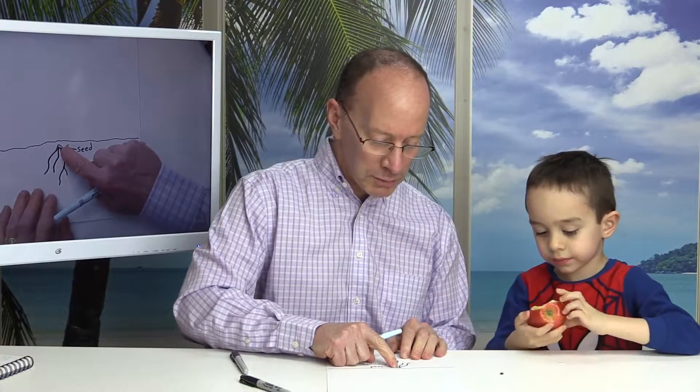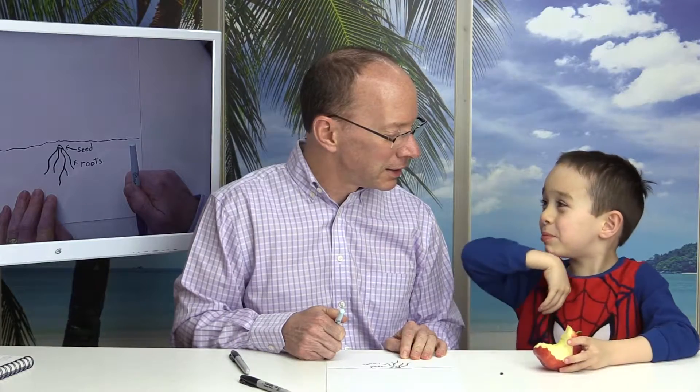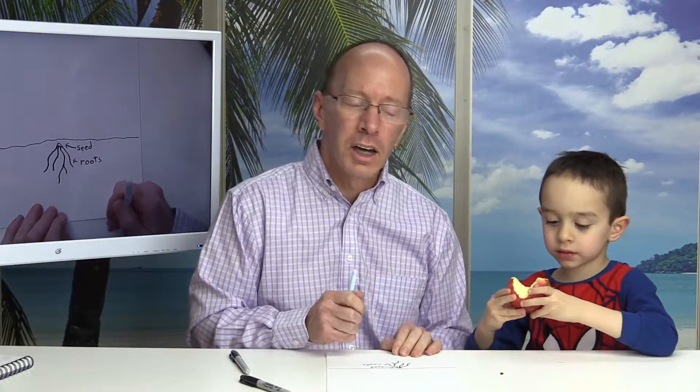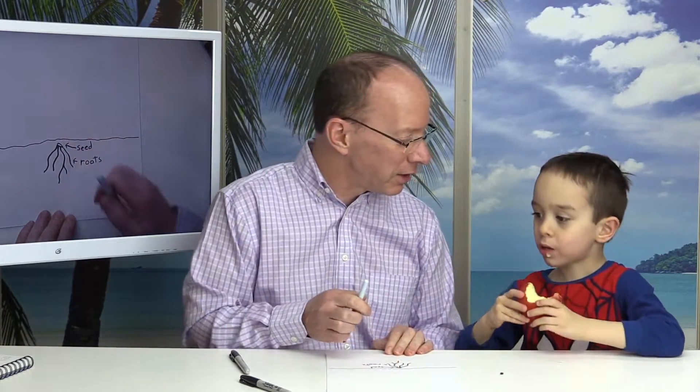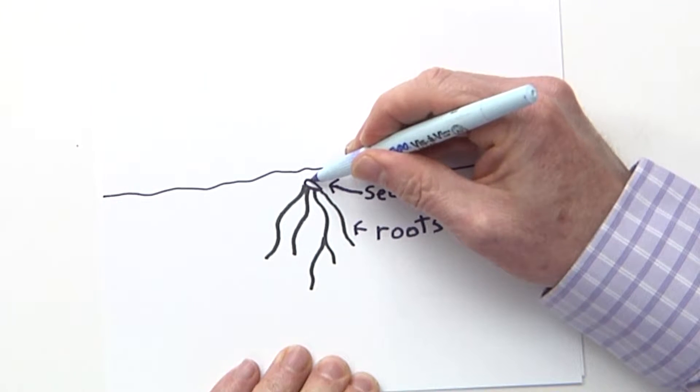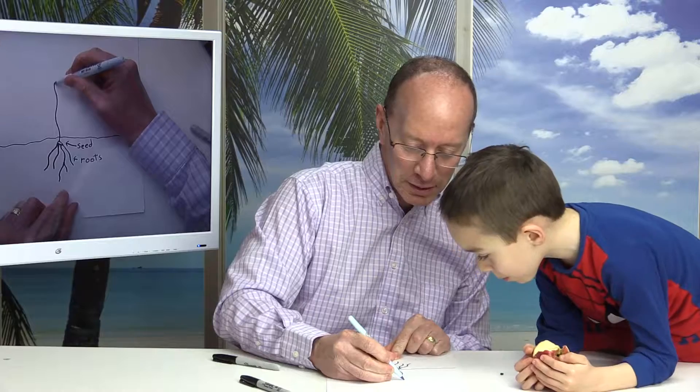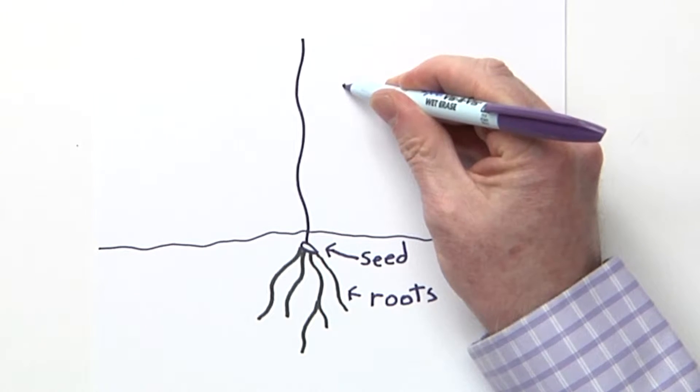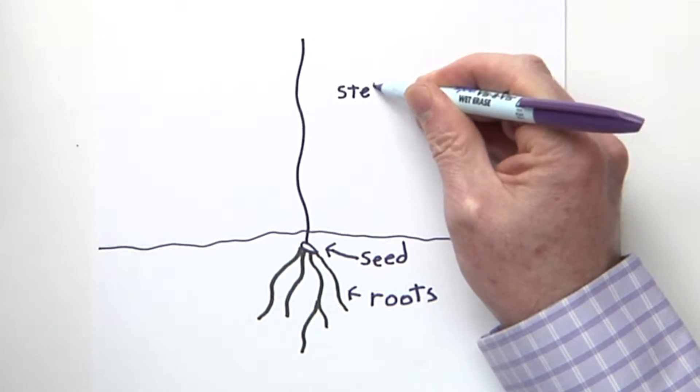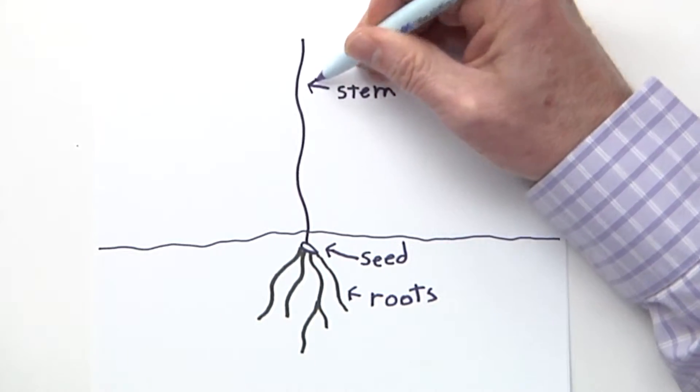Now do you know what comes out of the seed and starts to grow out of the ground? The plant. Yes, the plant will start to grow out of the ground. But there's something that holds the plant. It's very important. A stem. So we're going to draw a stem coming out of the ground like this. So we will label this stem, S-T-E-M, and draw a little arrow to the stem.